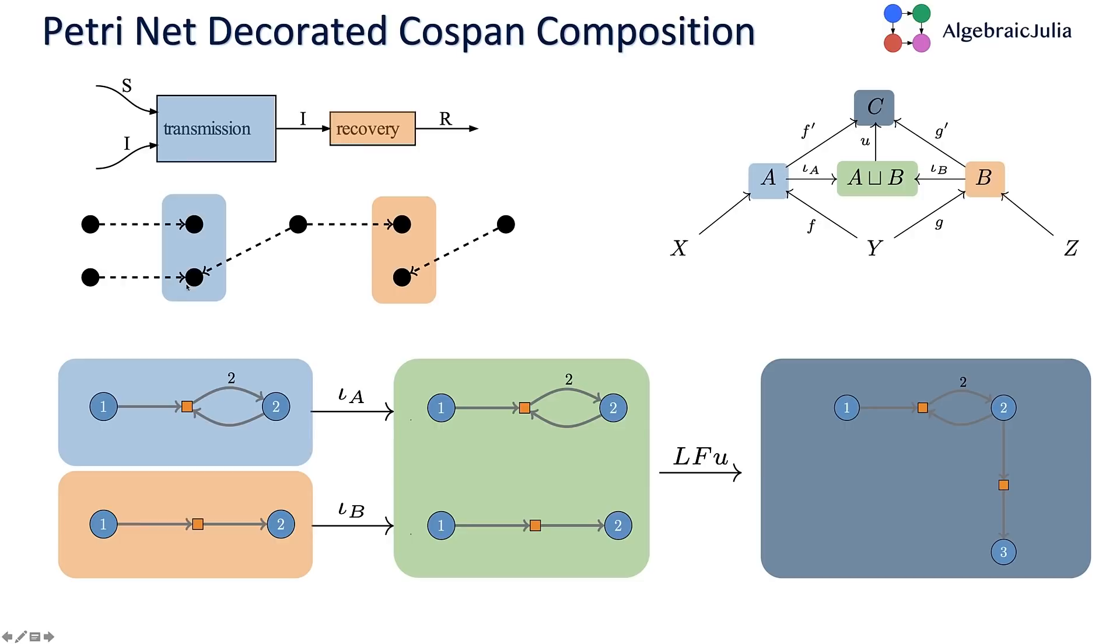You can think of these dots as variables in the system. I have two variables in the transmission system, two variables in the recovery system. I'm going to glue them together along this boundary that says the second variable of transmission is the first variable of recovery. The construction in decorated cospans tells me what to do.